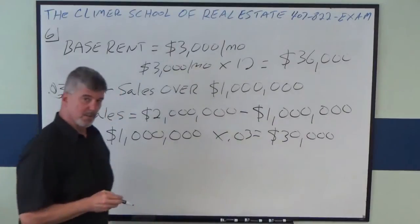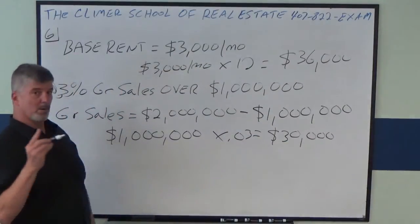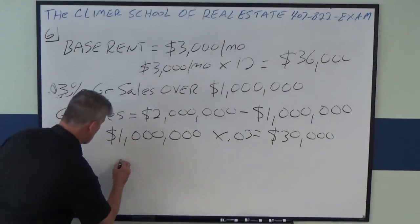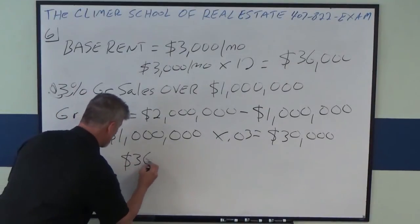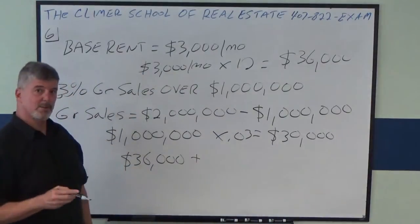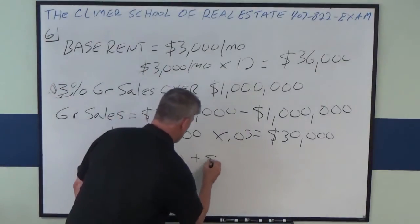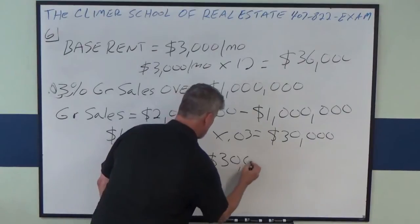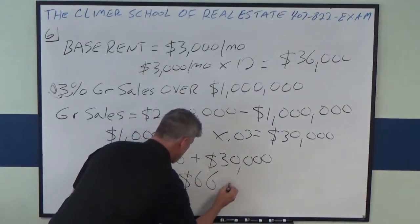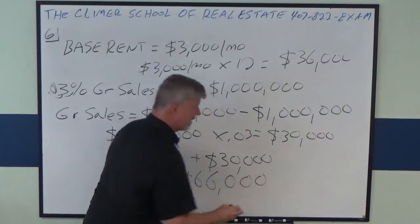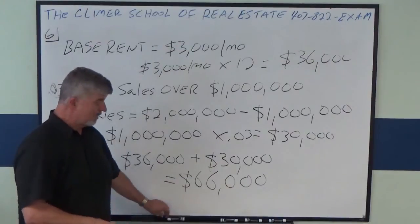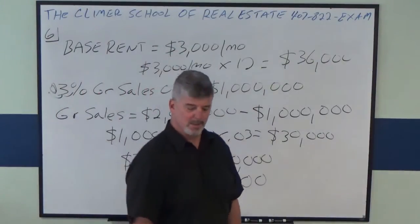That's the extra. So how much do they pay in total? They add the extra $30,000 to their base rent, and they're going to pay $66,000 in rent because they had such a good sales year.